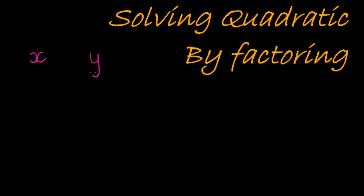I've mentioned that we can solve quadratic equations by factoring. But before I get there, let me first try and explain something using the following idea. Say I'm thinking of two numbers, a number x and a number y, and I tell you that you must guess these numbers. I'll give you one more clue: when I multiply these two numbers, I get zero. Can you guess my numbers?